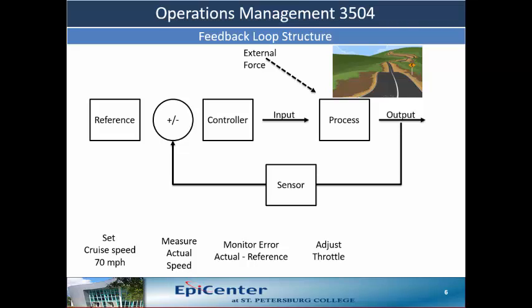The output of this system is graphically shown here. There is a little oscillation at first, showing a change in speed due to the external force, where after a little while the reference point is reached again. This type of system is called a feedback loop structure, and it provides control over the output of the system.